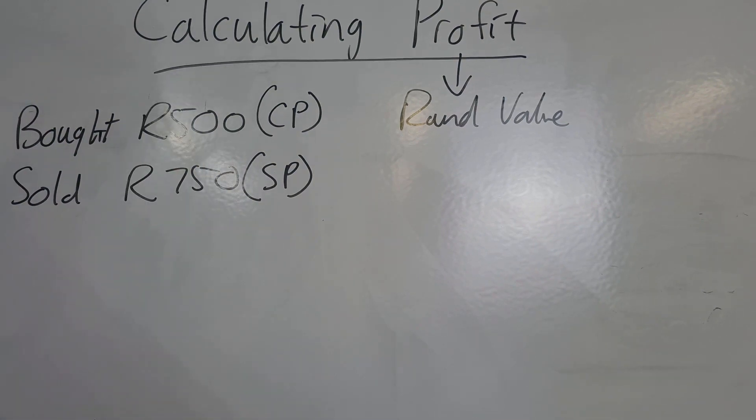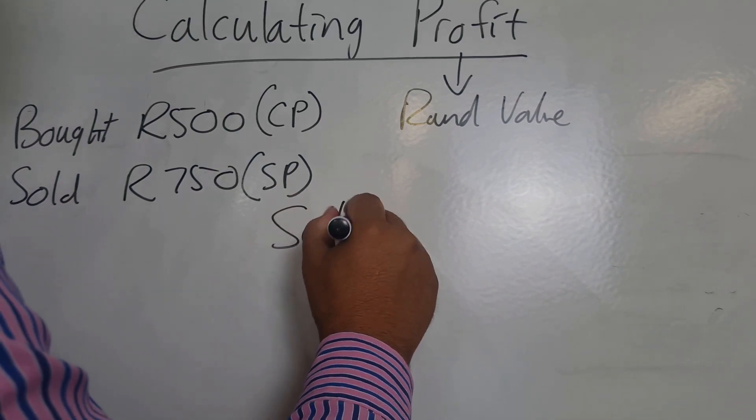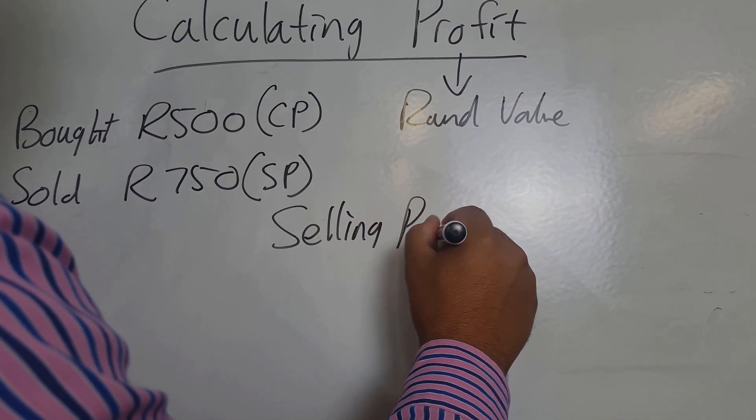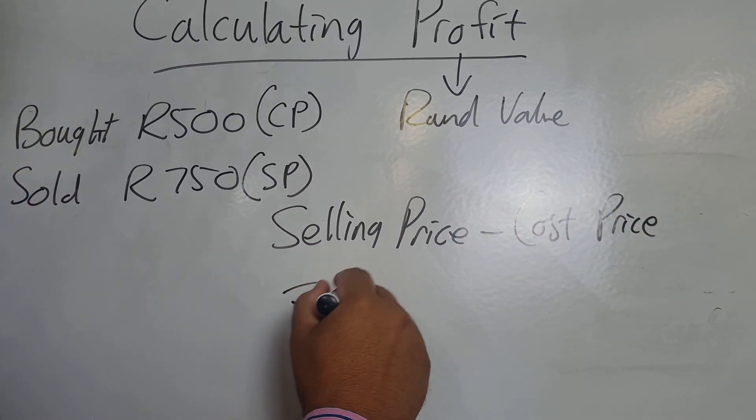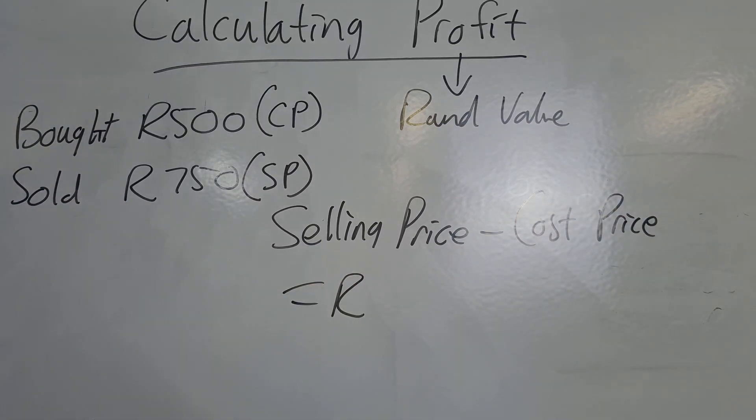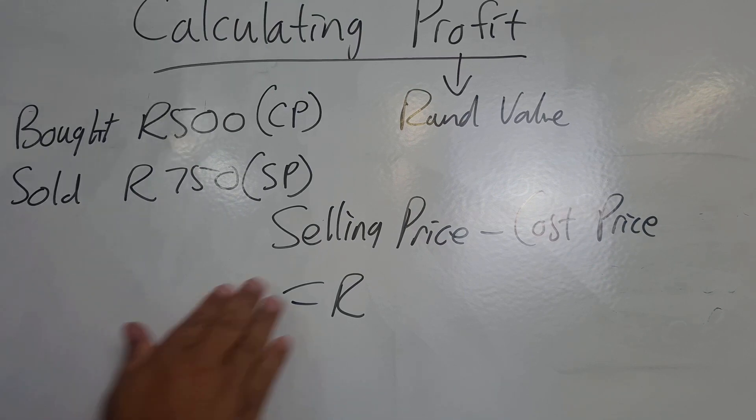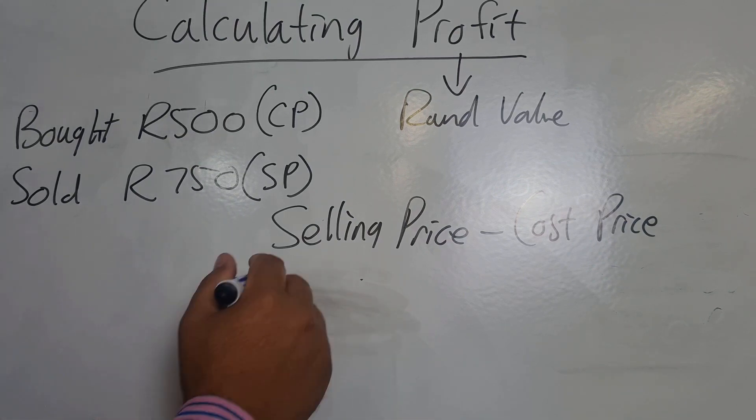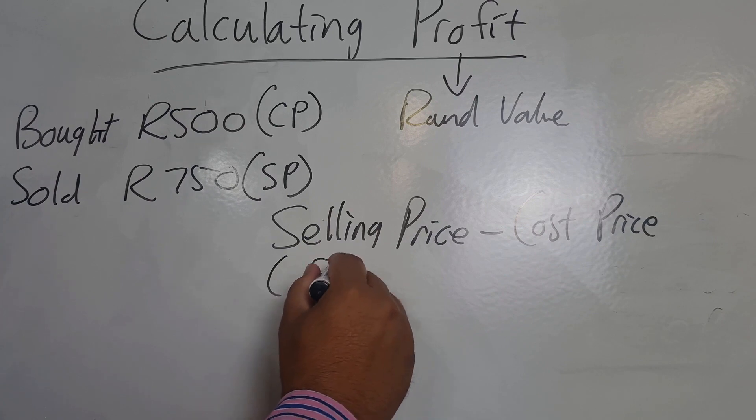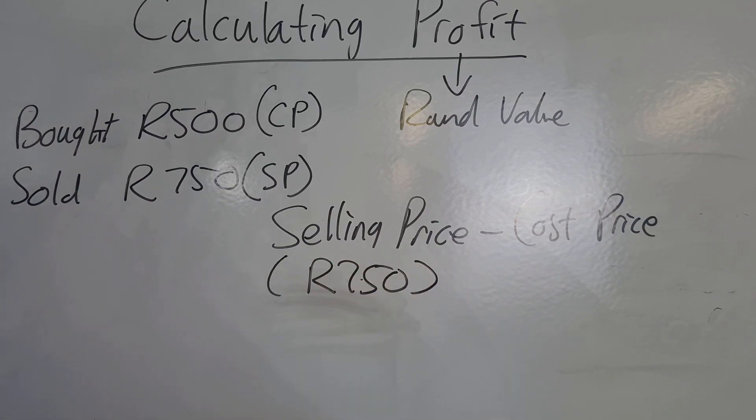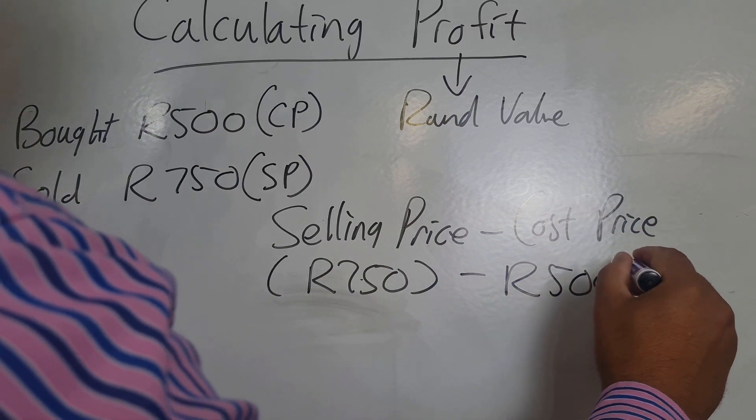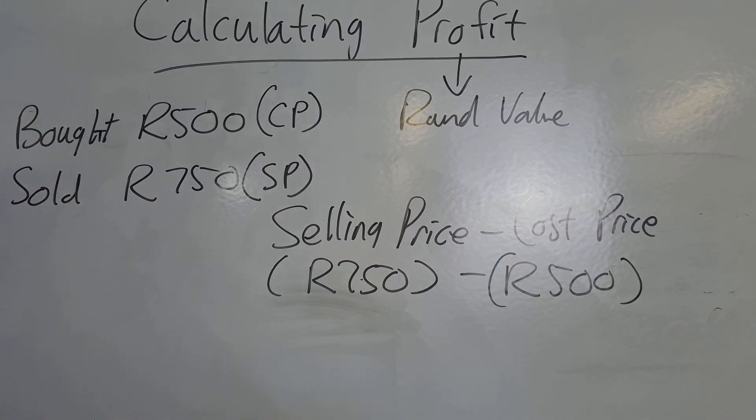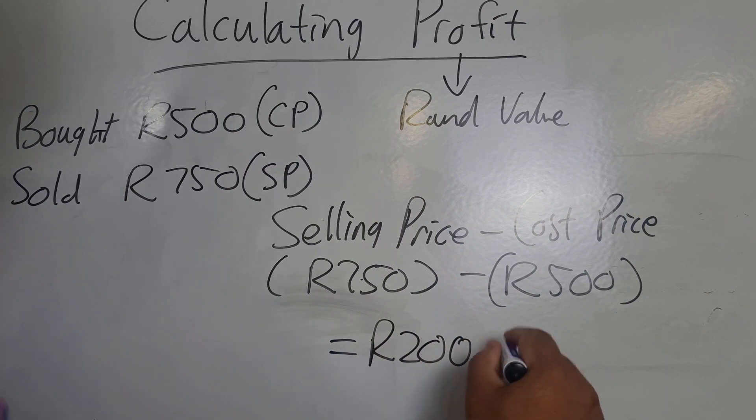And we have a simple formula when calculating profit, and that is we take our selling price, we subtract that from what it cost us, and we end up with our profit. So if that's the case, what is my selling price? 750 rand. What is my cost price? 500 rand. And when I subtract the two, what am I left with? I'm left with 200 rand in profit.